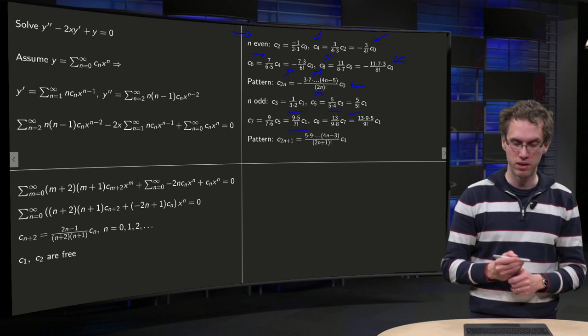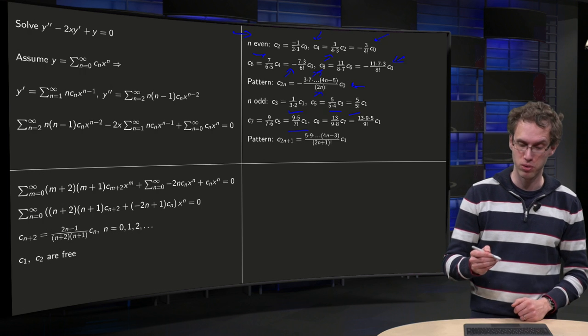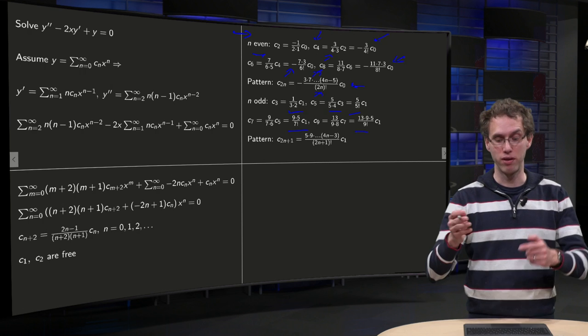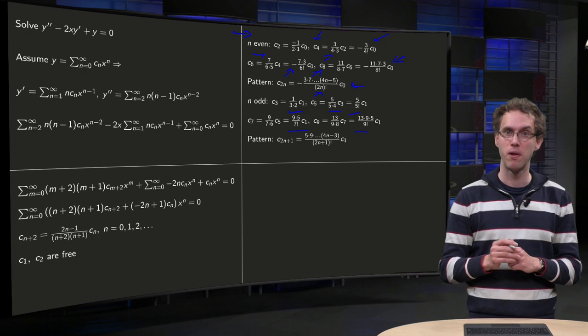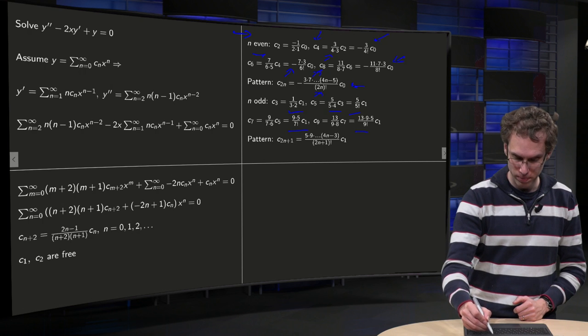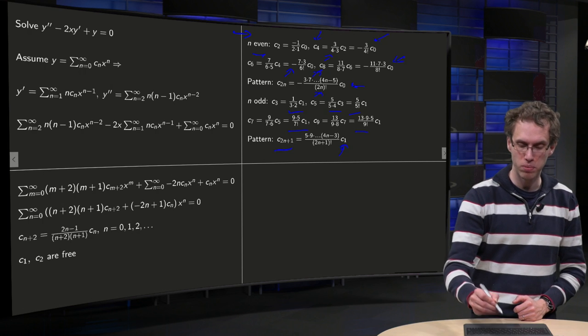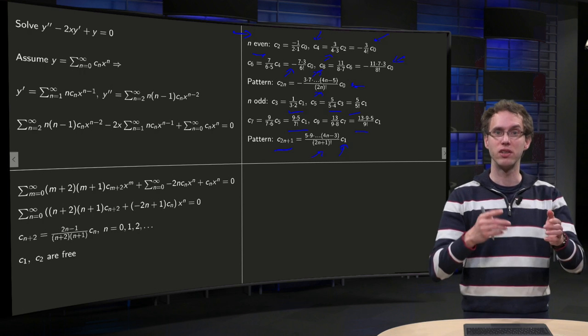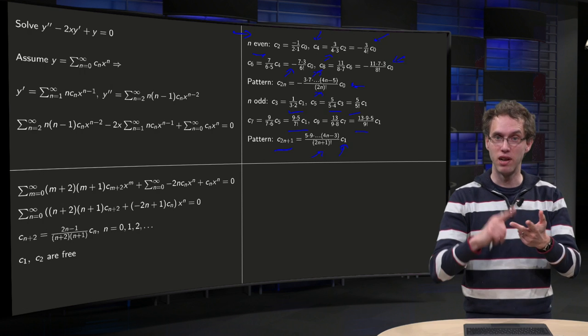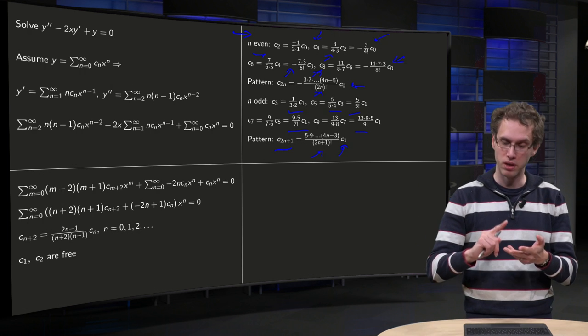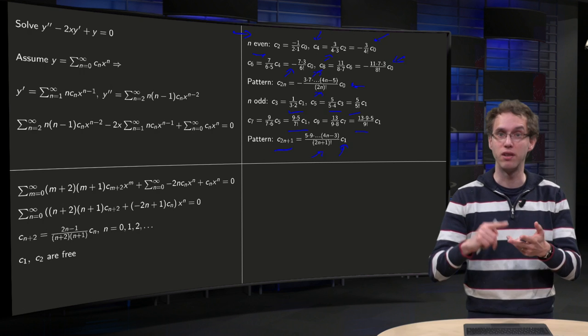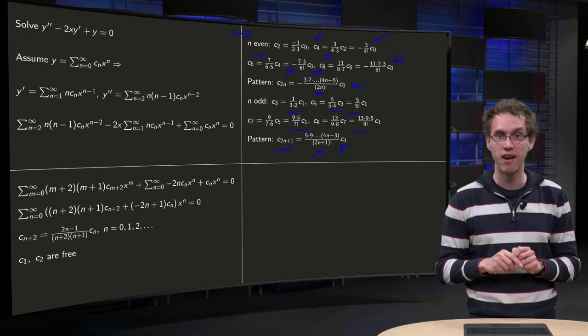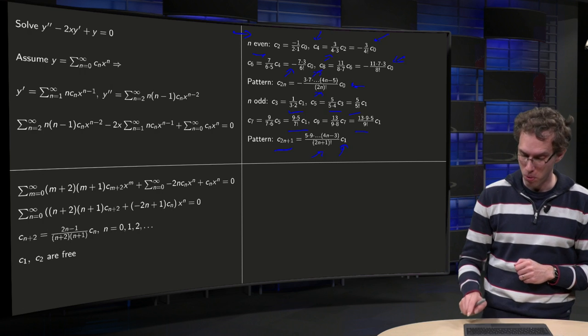You get 9×5/(7!) times c1. And for c9, you get 13×9×5/(9!) times c1. So you always have c1 for the odd coefficient c(2n+1). You always divide by (2n+1)!. And in the numerator, you get 5×9×13. And if you go on, times 17×21, etc. So that's the pattern for the odd terms.